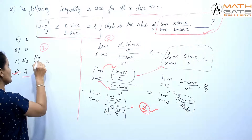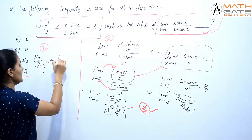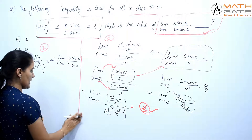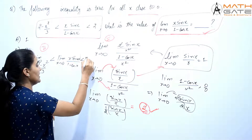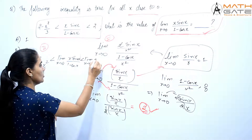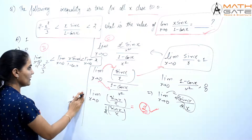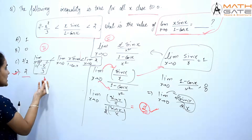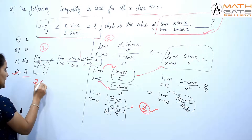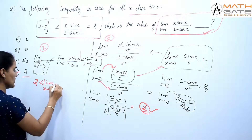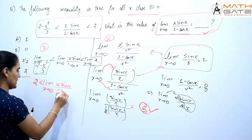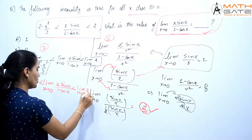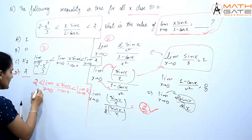When we apply limit x tends to 0, we get: limit x tends to 0 of (2 - x²/3) ≤ limit x tends to 0 of x·sin(x)/(1 - cos(x)) ≤ limit x tends to 0 of 2. Now, limit x tends to 0 of 2 means 2 will remain as 2. So we have the middle expression lying between two bounds.